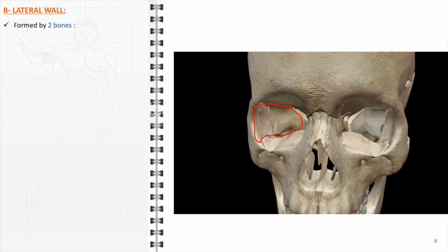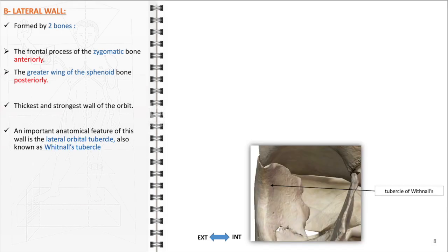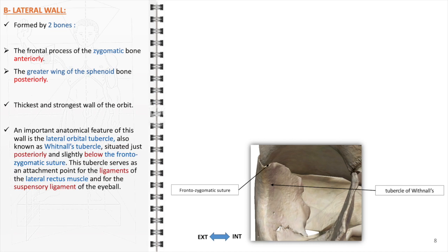The lateral wall of the orbit, renowned for its robustness, is structurally formed by two distinct bones. Anteriorly, it comprises the frontal process of the zygomatic bone, and posteriorly, the wall is reinforced by the greater wing of the sphenoid bone. This wall stands out as the thickest and strongest among the orbital walls. An important anatomical feature is Whitnell's lateral orbital tubercle, which serves as a critical anchor point for the ligaments of the lateral rectus muscle and provides attachment for the suspensory ligament of the eyeball.